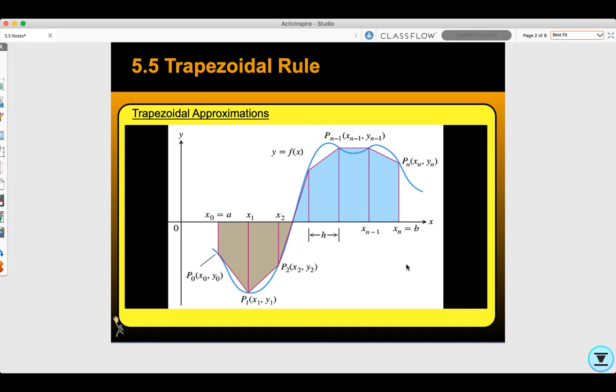Trapezoidal sums are too big or too small based on the second derivative, whether the function is concave up or concave down.